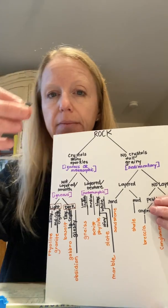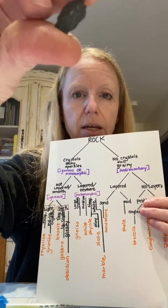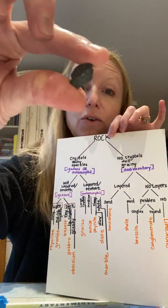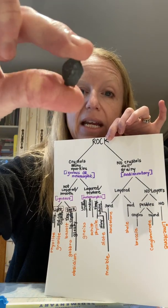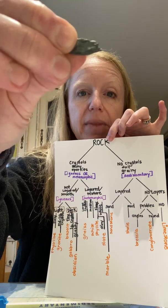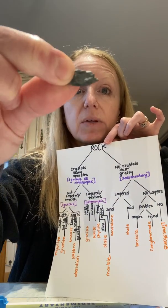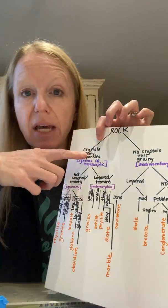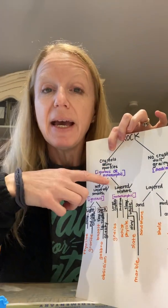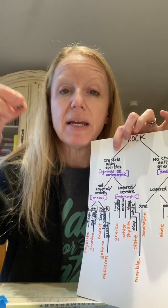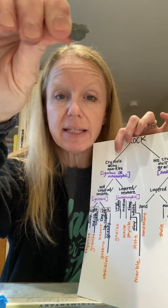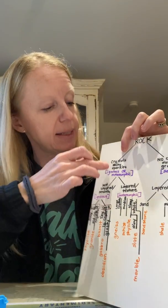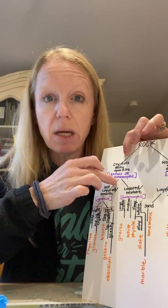I'm going to pick a rock. Here's my first rock. First thing we ask is: is it crystalline or not? Does it have a shiny kind of appearance? This one actually does — it has a sparkly, shiny appearance when it's in the light. So we go down the crystal side: shiny sparkles because it has crystals in it. This can only be igneous or metamorphic. Sedimentary rocks do not have crystals in their sedimentary state. So we know already it's going to be igneous or metamorphic.